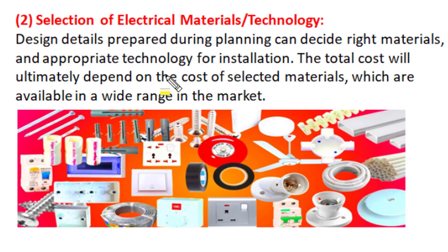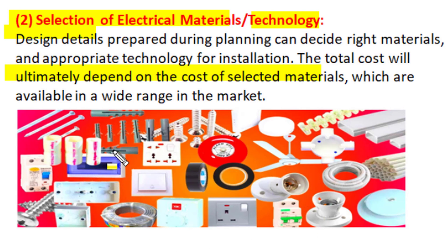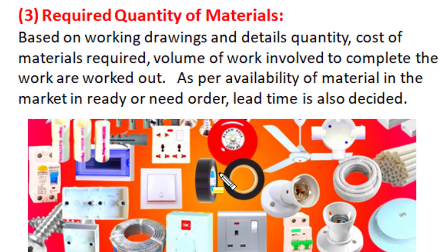After approval and financial sanction, the second important purpose of electrical estimation is selection of electrical material, technology, and workmanship for execution of electrical installation work. In estimation, we do rigorous planning and prepare design details used to select the right material and appropriate technology. The total cost of any electrical installation ultimately depends upon the cost of selected material, and in the present market a wide range of material of different quality and cost values is available — so making an appropriate selection is part of electrical estimation.